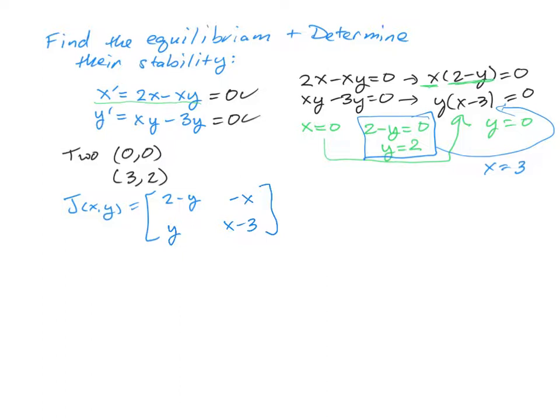We now need to evaluate it at each of the critical points that we found. So the Jacobian at 0, 0 is going to give us the matrix with 2, 0, 0, negative 3. And the eigenvalues when you have a diagonal matrix are just readable right off of it. The first one is a positive 2, and the second one is a negative 3. Because those are real and distinct, but they have different signs, we know that we have a saddle node as our linearization.